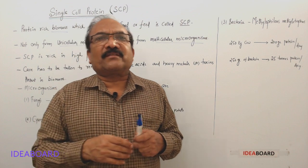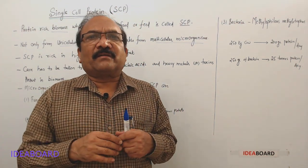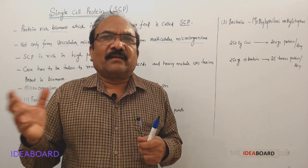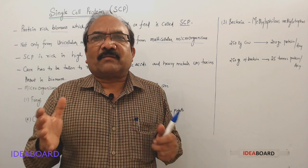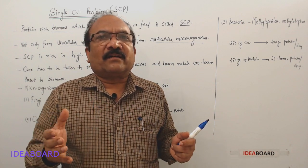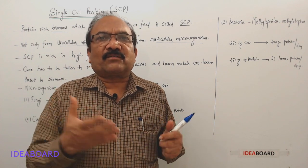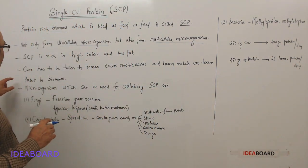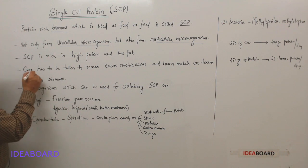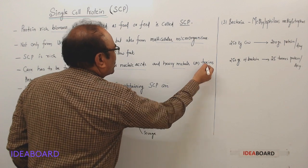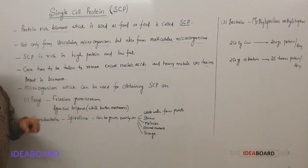But there are some limitations also in the production of this SCP. This SCP will contain high amount of nucleic acids, DNA and RNA, and also some SCP will contain heavy metals and some will contain toxins. So that's why we have to take care to remove this excess amount of nucleic acids and heavy metals or toxins. Care has to be taken to remove excess nucleic acids and heavy metals or toxins present in the biomass.